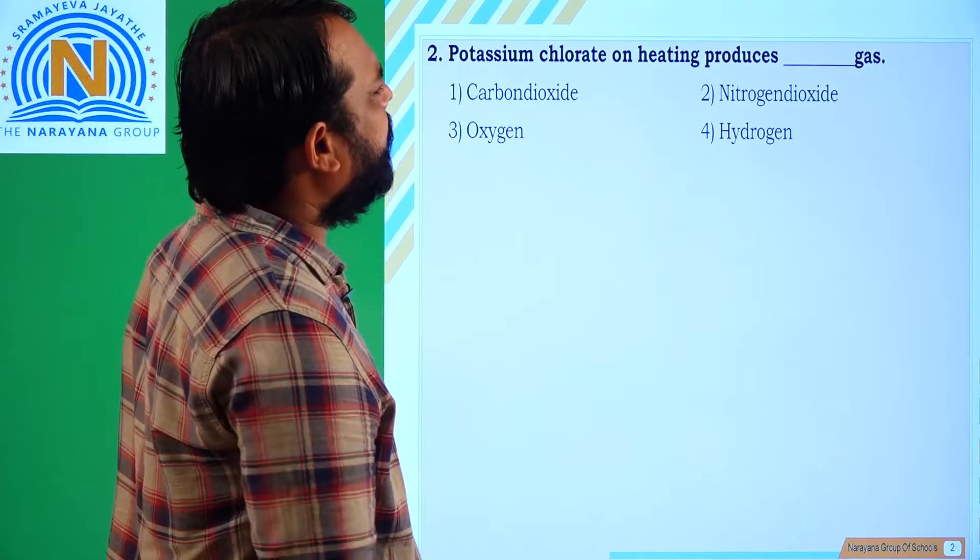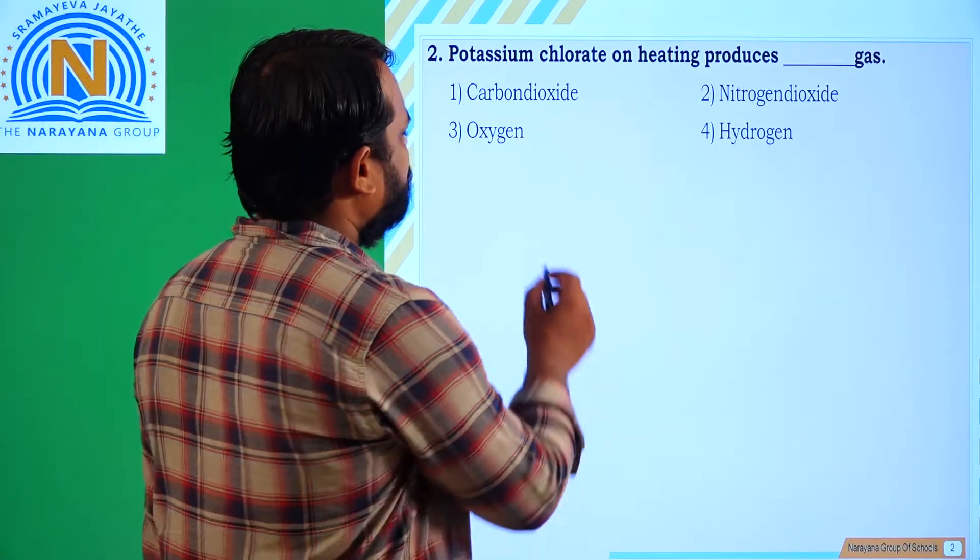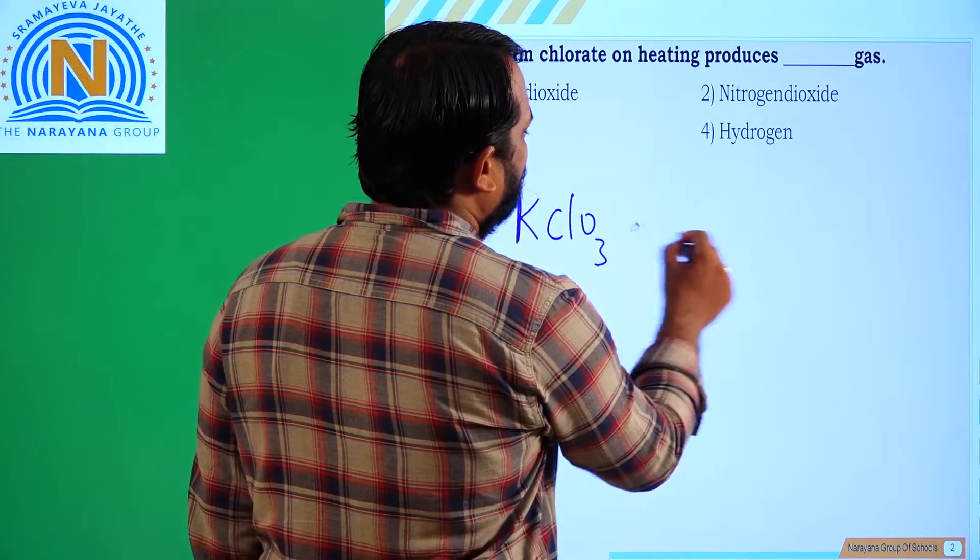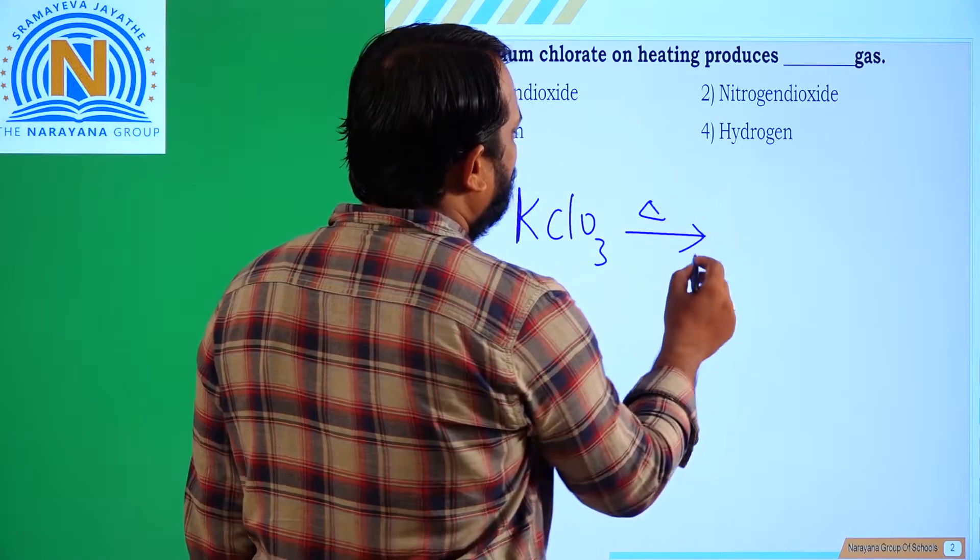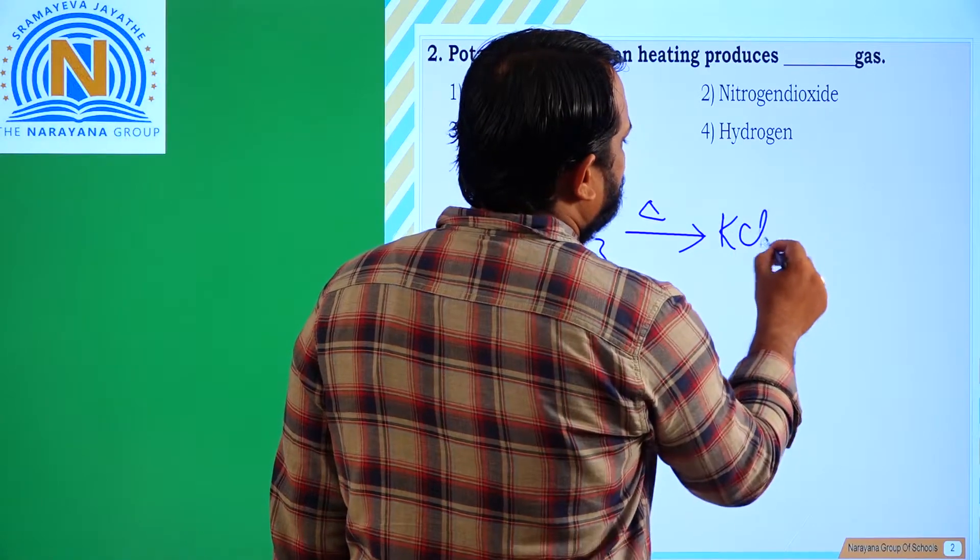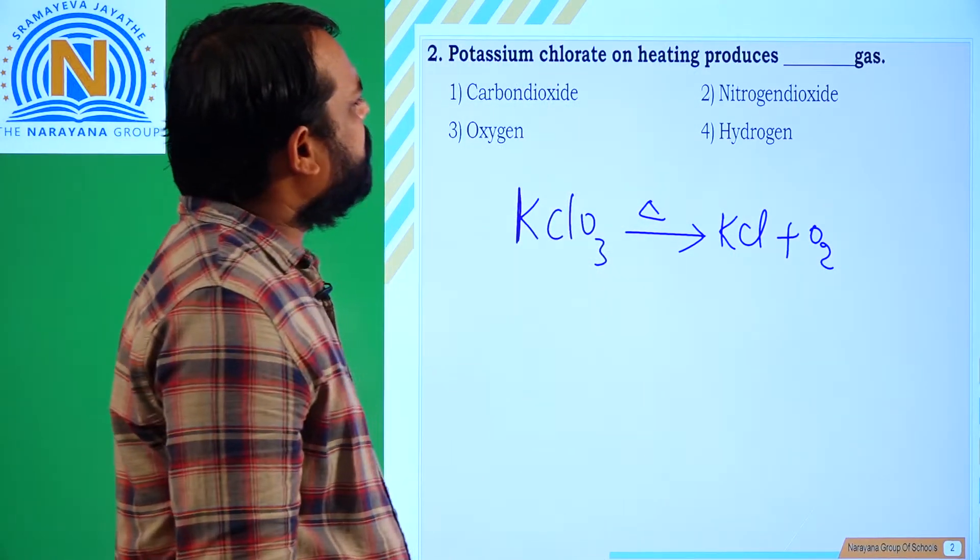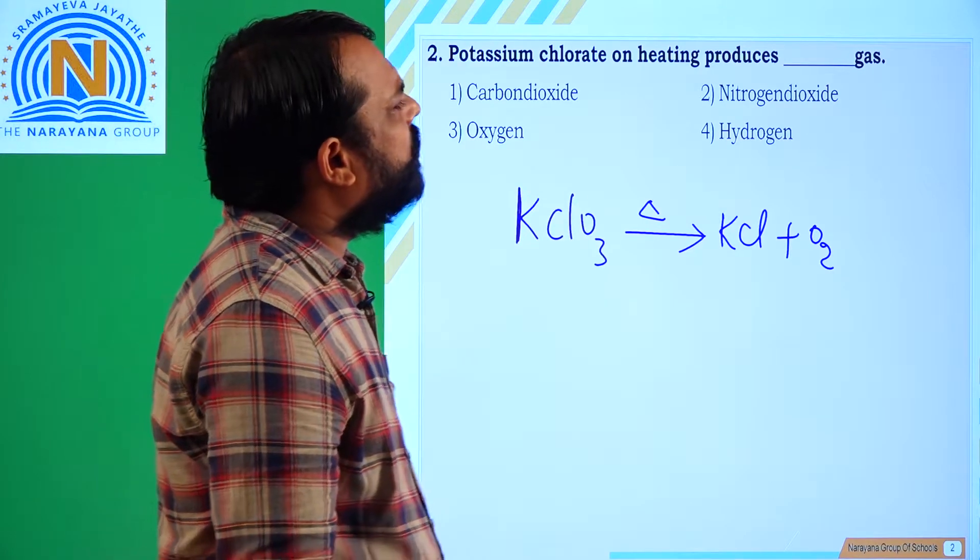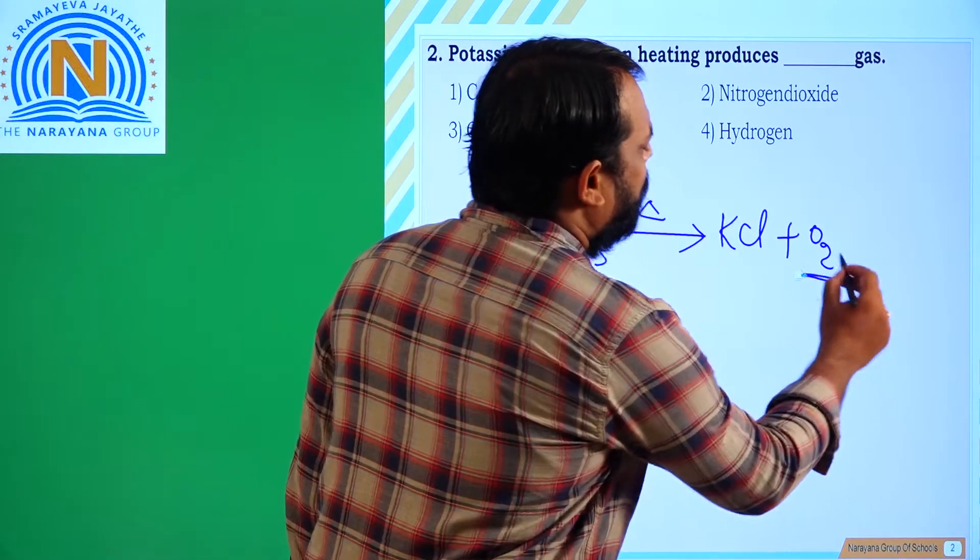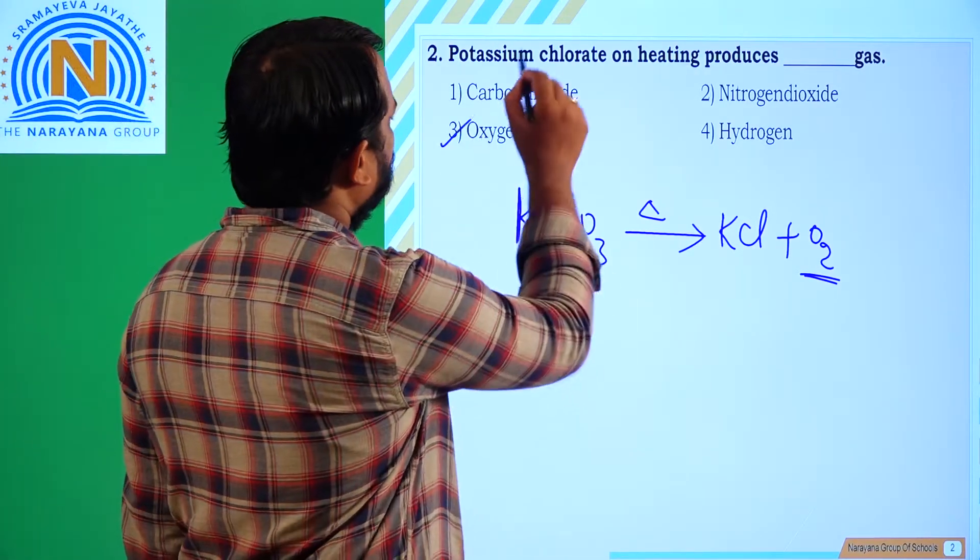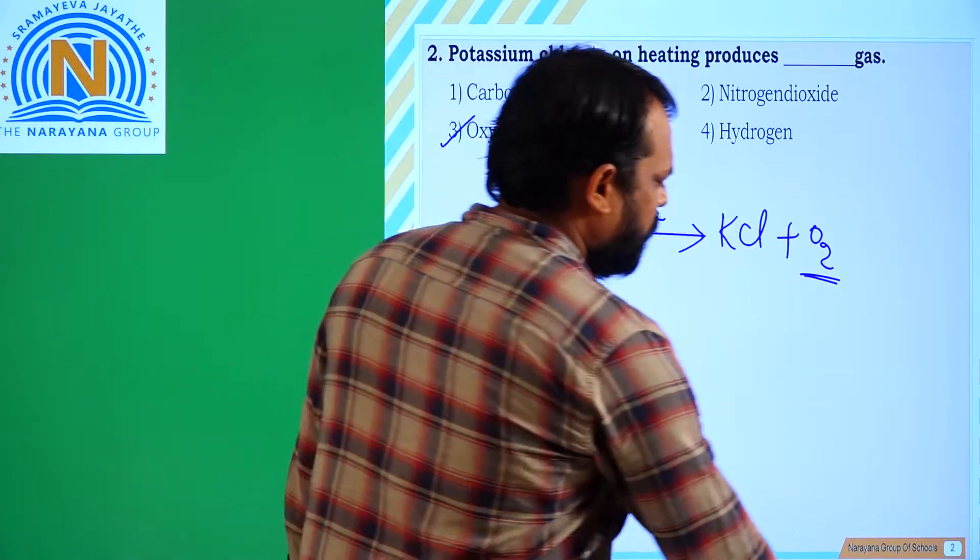Potassium chlorate on heating produces dash gas. What is the formula of potassium chlorate? KClO3. On heating what happens? KCl plus and it releases oxygen gas. So the potassium chlorate on heating produces which gas? Oxygen gas. What is the option? Third option. And next we will move to next question.